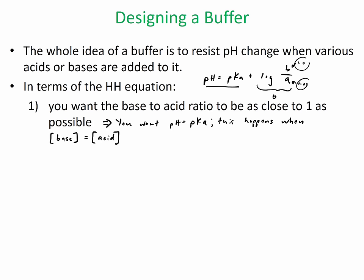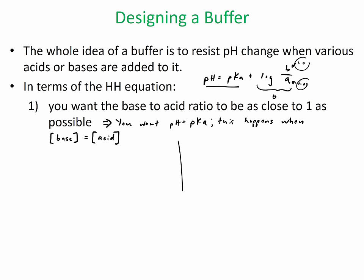When those concentrations are equal, then pH equals pKa. What's so important about when that happens — let me draw this titration curve. The titration curve is going to show pH on the y-axis, and it's going to show volume of either OH⁻ or H⁺ — so like a strong acid or strong base being added.